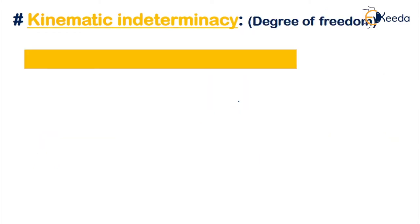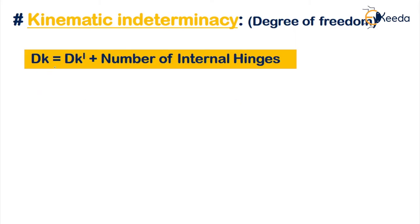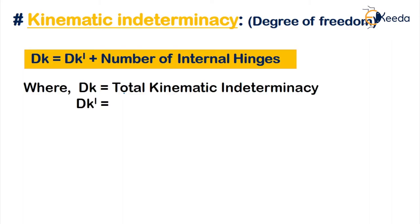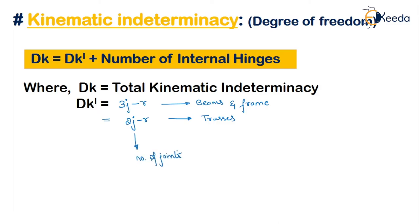The formula for kinematic indeterminacy is: DK = DK' plus the number of internal hinges. Note that unlike static indeterminacy where internal hinges are subtracted, here they are added. DK' is calculated differently for different structure types: for beams and frames it is 3J minus R, and for trusses it is 2J minus R. Here J is the number of joints and R is the number of unknown reactions.